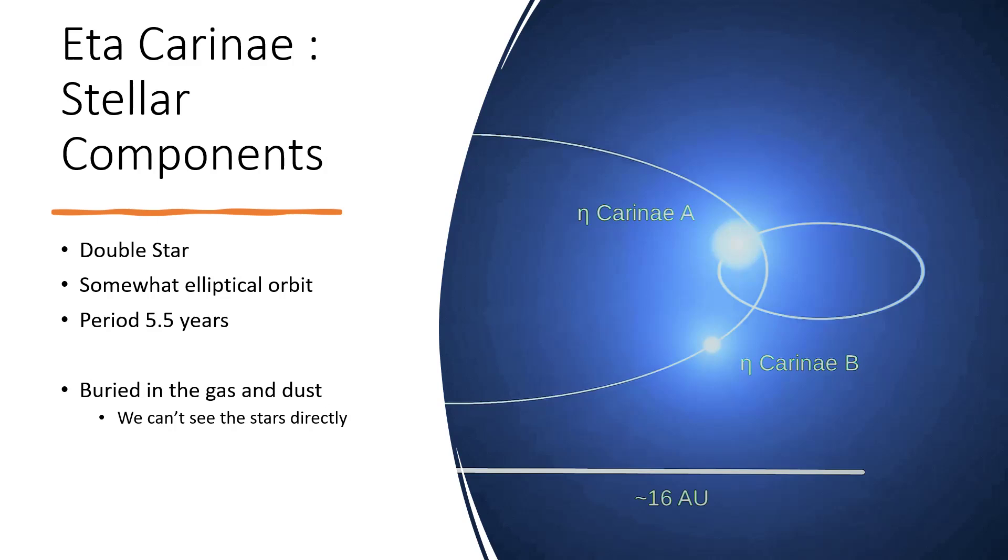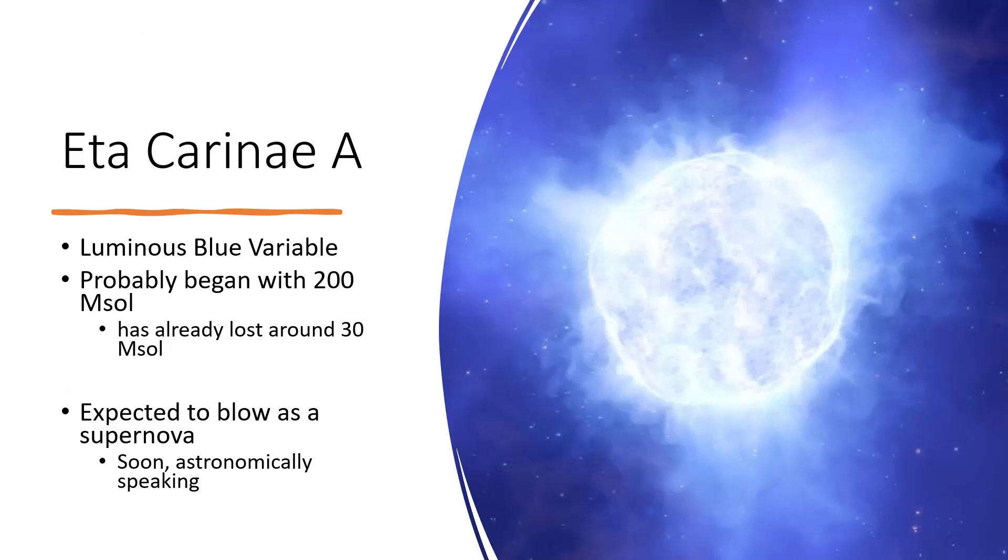What we believe at this point is that the larger star, Eta Carina A, is so massive it's probably a luminous blue variable. It began with somewhere between 150 and 250 times the mass of the sun, and has probably lost, by these periods of ejection of material and its extremely powerful solar wind, 30 times the mass of the sun already. It's quite an incredibly violent situation, and that violence is likely to continue.